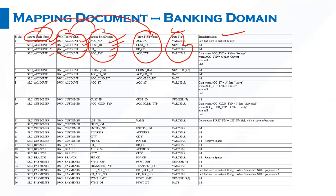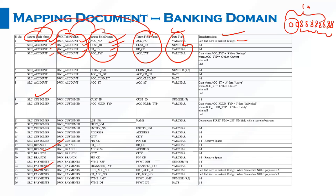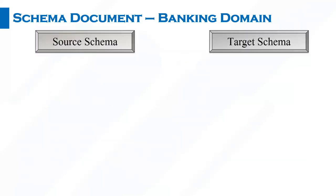We can also see what kind of transformation has to happen before data is moved from source to target. In this case, 'left pad zero to make it 10 digits' — meaning if an account number is 8 digits, two zeros are added. If it's already 10 digits, it stays unchanged; if less than 10, zeros are padded to make it a 10-digit number. Similarly, you can see different source tables such as src_customer, src_branch, and src_payment. The mapping document contains all the details: source tables, target tables, field names, and transformations.